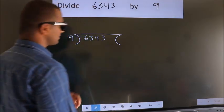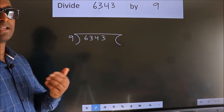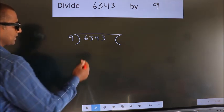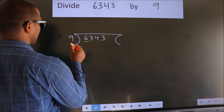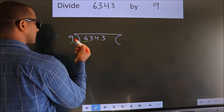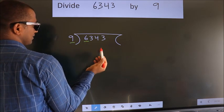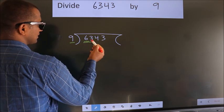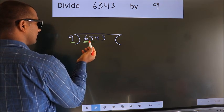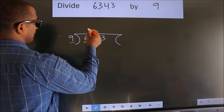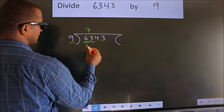This is your step 1. Next. Here we have 6. Here 9. 6 smaller than 9. So we should take 2 numbers. 63. When do we get 63? In 9 table, 9 7s, 63.